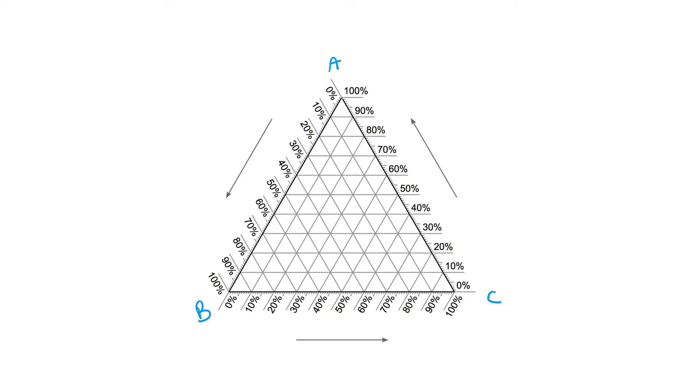Now each of the apexes, say at this point at the top, our substance would be 100% component A. At this bottom left corner it'd be 100% component B, and the bottom right 100% component C.